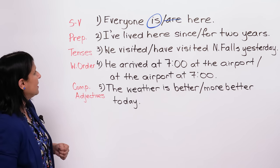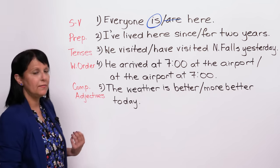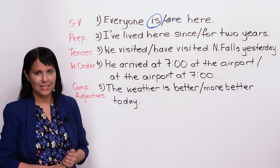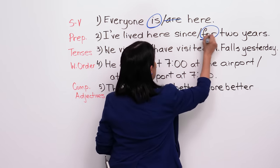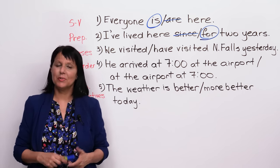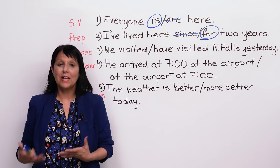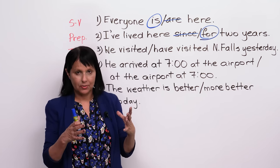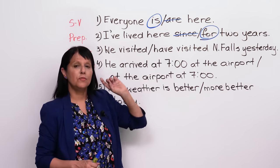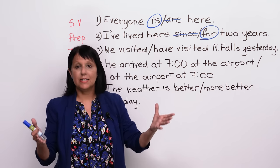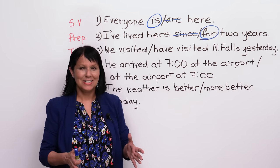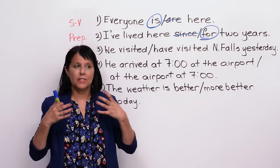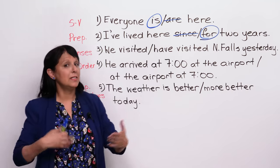Number two. This is a preposition error. 'I've lived here since two years' or 'I've lived here for two years' — which is correct? It should be 'I've lived here for two years.' We use 'for' plus the period of time — for how long? For two years. And we use 'since' from a point in time. So if it's 2010 now, we could say 'since 2008' — two years before that. But 'for' plus the period of time. Once you understand it, it will be much easier to apply, especially once you practice it.